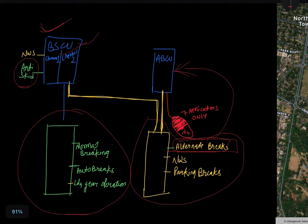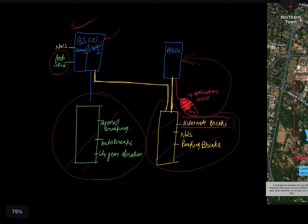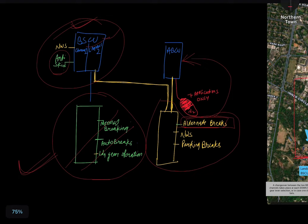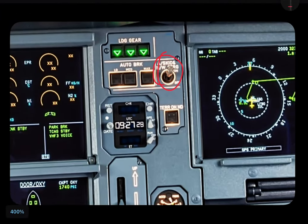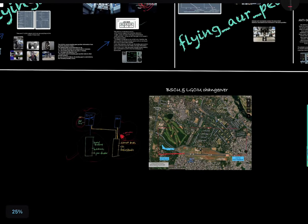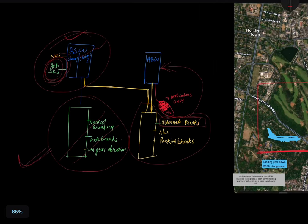For alternate braking without anti-skid: this occurs when both green and yellow hydraulic are lost, or when yellow is available but BSCU has failed, or when the nose wheel steering and anti-skid switch is intentionally switched off. In these cases, anti-skid function will not be available. Alternate braking will be available with the help of ABCU only — the alternate braking control unit — but without anti-skid.